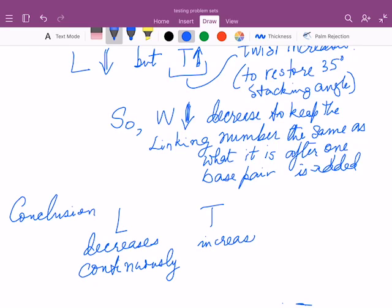But because the base pairs want to maintain their angle, the twist will actually increase continually. It has to because the new base pairs want to be aligned just like in B-formed DNA in a local sense. But the overall curvature of the DNA will change and the writhe will therefore decrease continually.